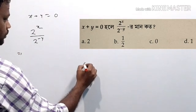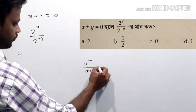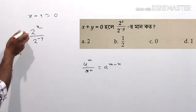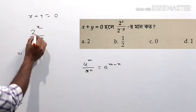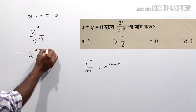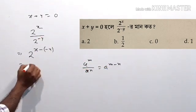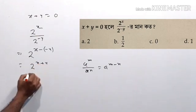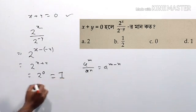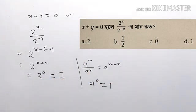The rule is: a to the power m by a to the power n equals a to the power m minus n. Here, 2 to the m is equal to x. Minus y, minus y — double minus y. 2 to the x plus y is equal to 0. 0 is equal to 0. This is 0, and 0 is equal to 1.